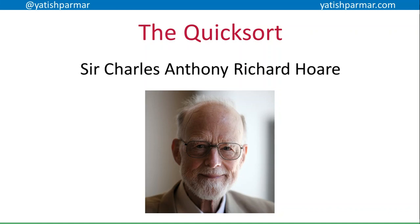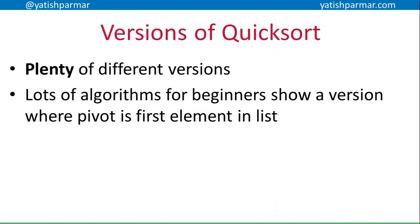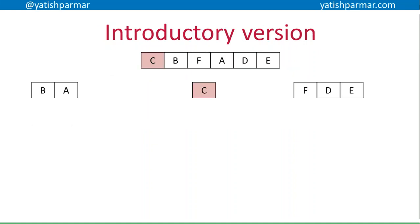It's quite a popular method for sorting. When you look online at quick sorts you'll find there are loads of different versions. We're going to be talking about something called a pivot. A lot of algorithms for beginners show a version where the pivot is the first element in the list — I'm going to start with that version and then show you an alternative following that.